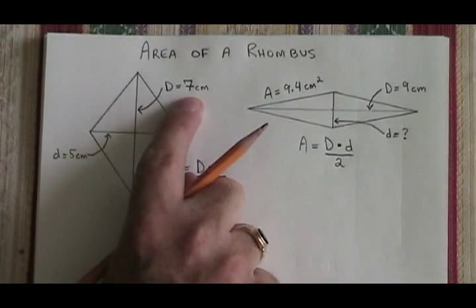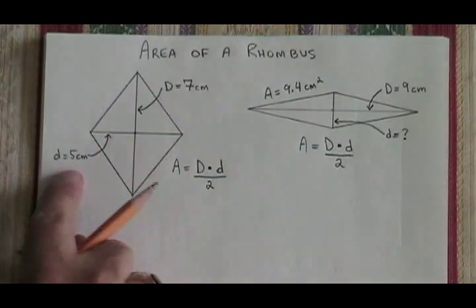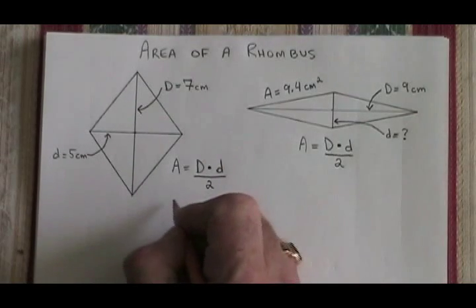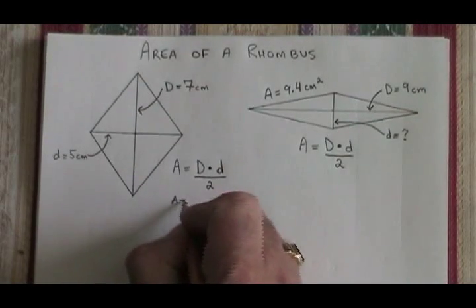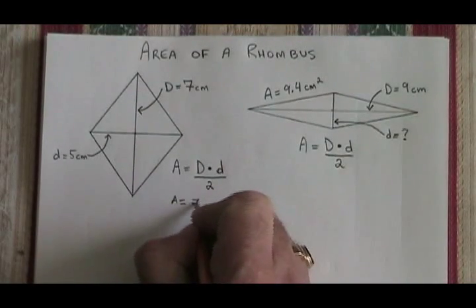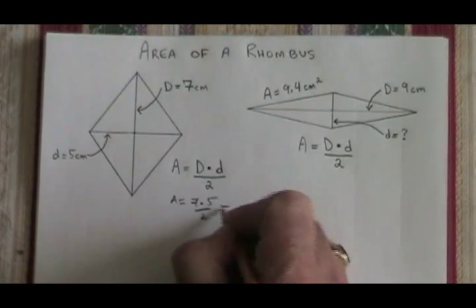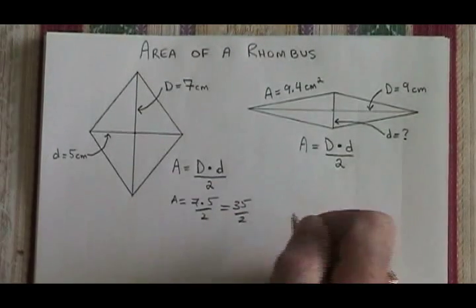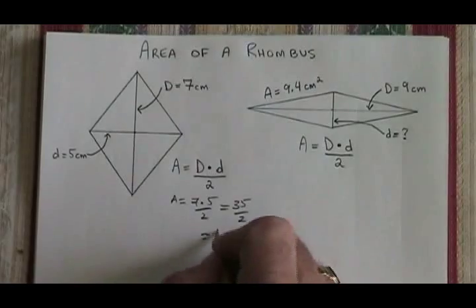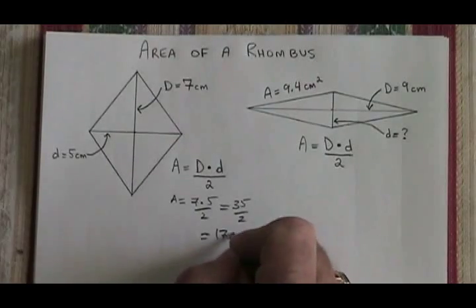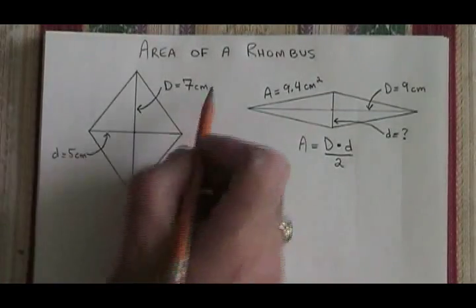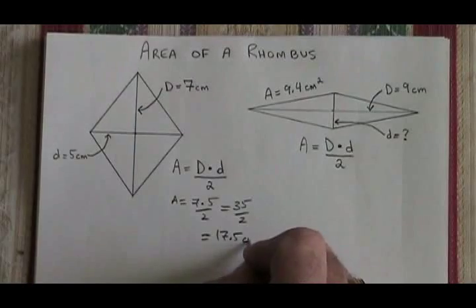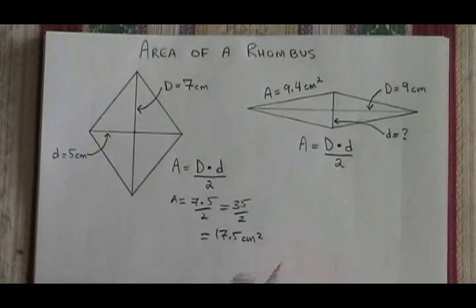In this case, our longer diagonal is 7 cm and our shorter diagonal is 5 cm, so our area is equal to 7 times 5 over 2, which is 35 over 2, which is equal to 17.5. Everything was in cm, so the area will be in cm².